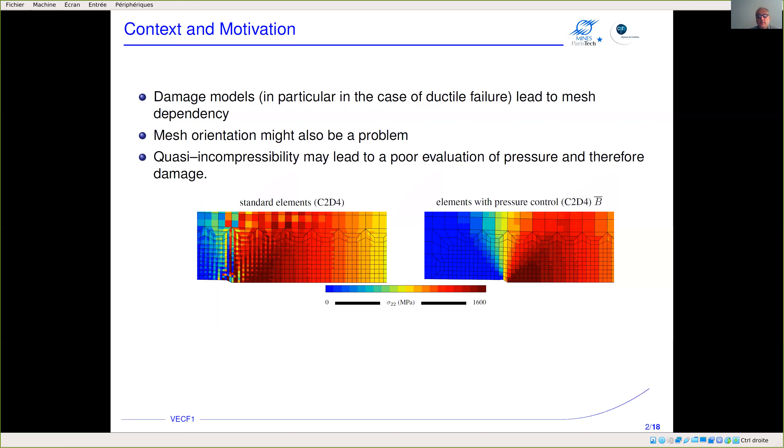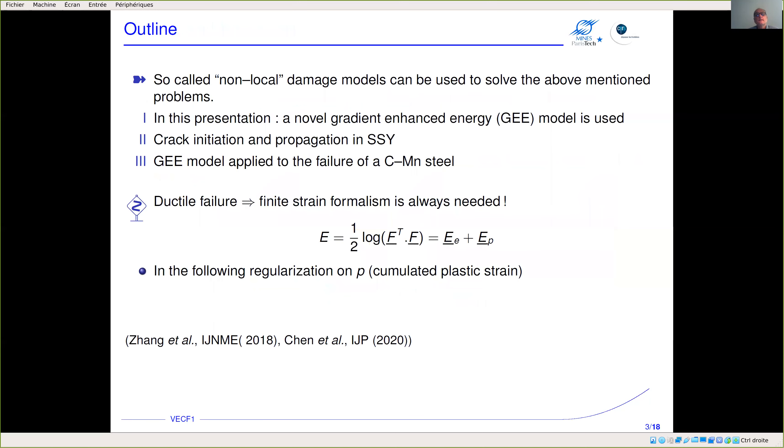This must be accounted for in the modeling. In this talk I'm going first to present a gradient enhanced energy model and then apply it to crack initiation and propagation in small scale yielding. I have another example dealing with carbon manganese steel but I probably won't have enough time to present it.